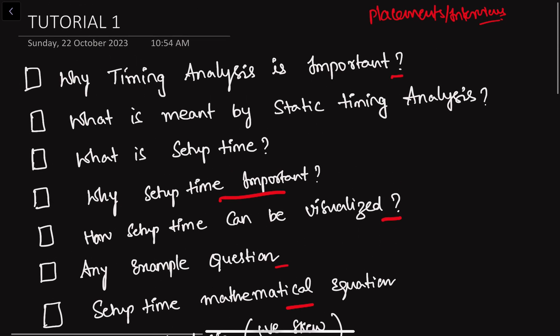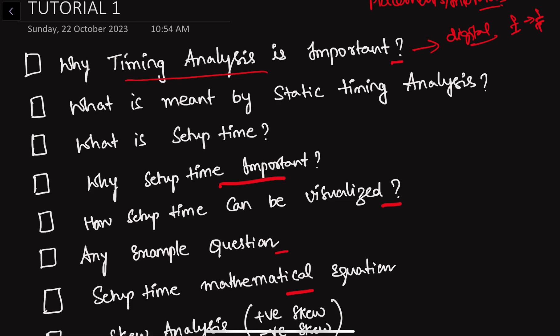So the first question is: why is timing analysis important? In any digital circuit, SOC, or design, everything starts with one specification — the operating frequency. It should operate at a certain frequency, which is the inverse of the time period. If the circuit you designed doesn't meet the frequency requirement, it's of no use. Timing analysis tells you whether your design will work at the target frequency. This analysis is done at multiple stages throughout the design cycle, including every step of the back-end process.